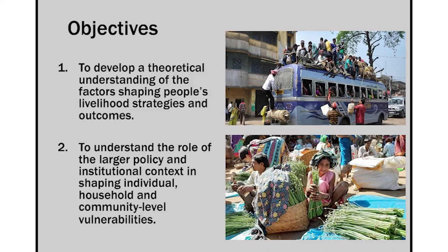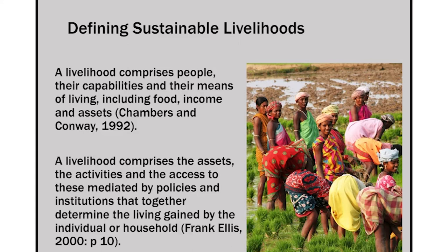We have two main objectives we will be looking at today. First is to develop a theoretical understanding of what are the factors that shape people's livelihood strategies and outcomes. Second, to understand the role of the larger policy and institutional context in shaping individual, household and community level vulnerabilities.